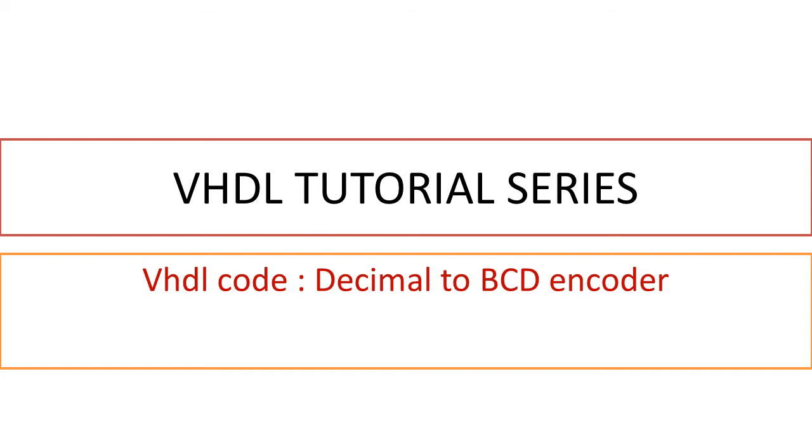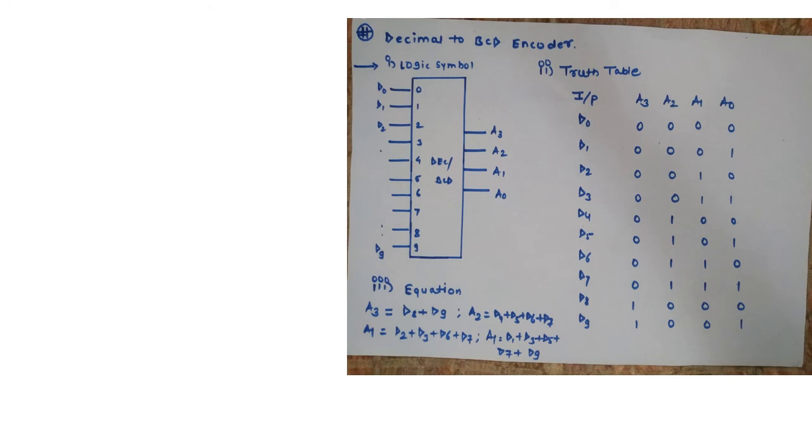Now let us concentrate on decimal to BCD encoder. Here we have the first term as logic symbol. While dealing with decimal to BCD encoder, the input terms are going to be our decimal digits while at the output side we will have BCD code. When we consider decimal digits we are having total 10 digits starting from 0, 1 and the last one is going to be 9.